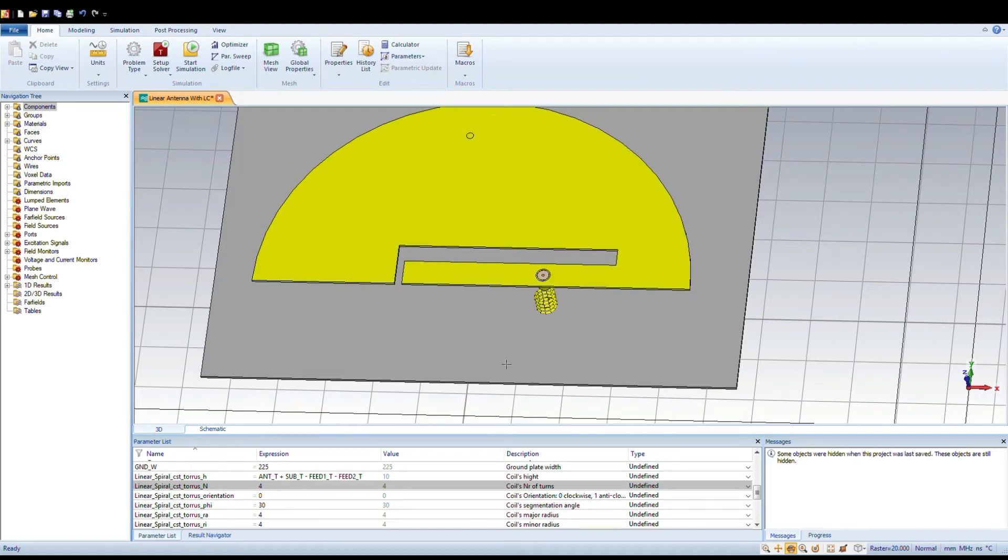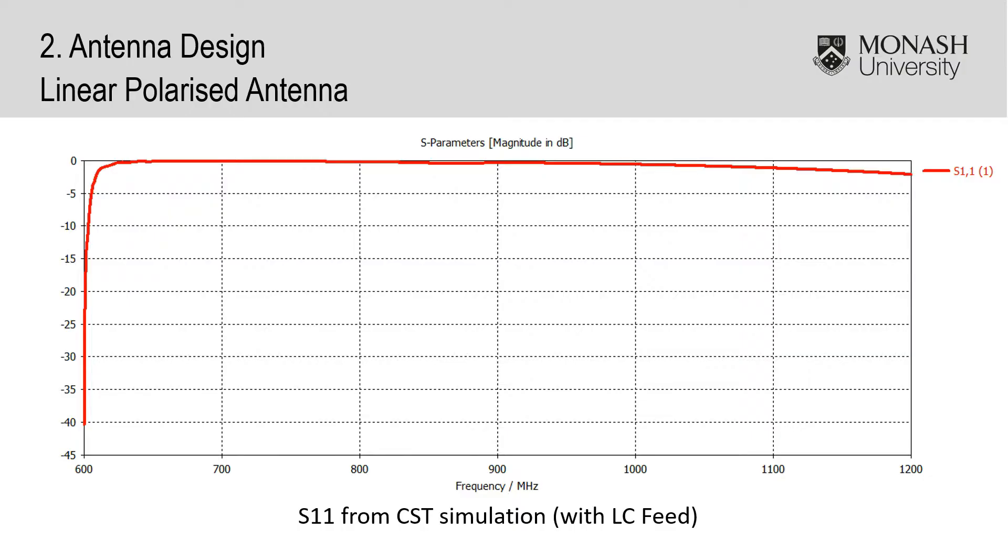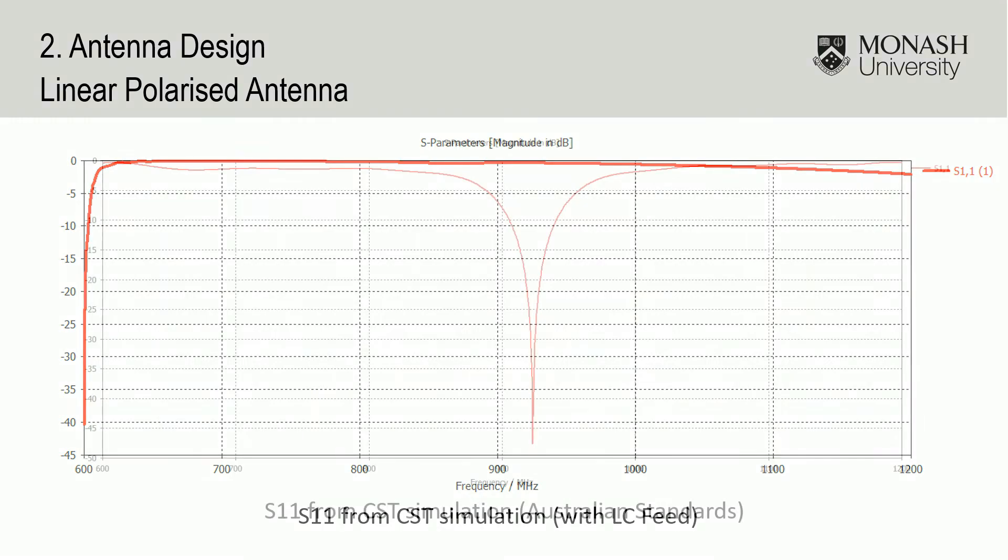After optimization, a satisfactory S11 could not be obtained and the antenna was simply optimized for Australian standards.